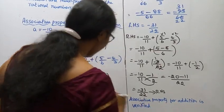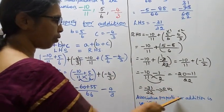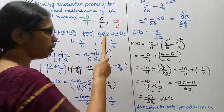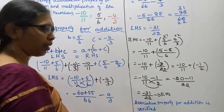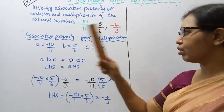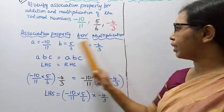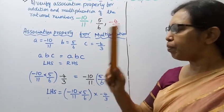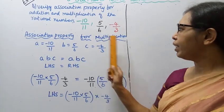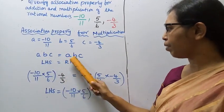Associative property for addition is verified. Now for associative property for multiplication. The formula is: A times (B times C) equal to (A times B) times C.